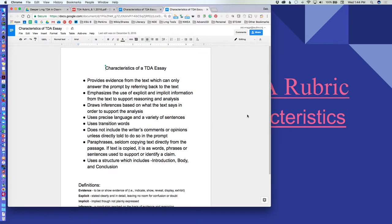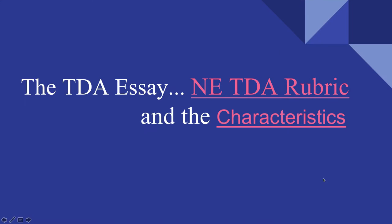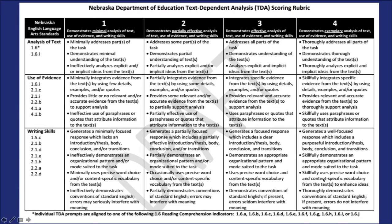Analysis is a detailed examination of the elements or structure of something, typically as a basis for discussion or interpretation. This is a document you want to share and discuss thoroughly with your students, along with the text-dependent rubric. Next, within our webinar, we're going to go more deeply into the explanation of the Nebraska text-dependent analysis scoring rubric.